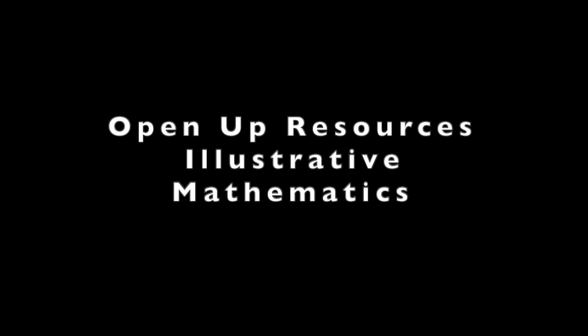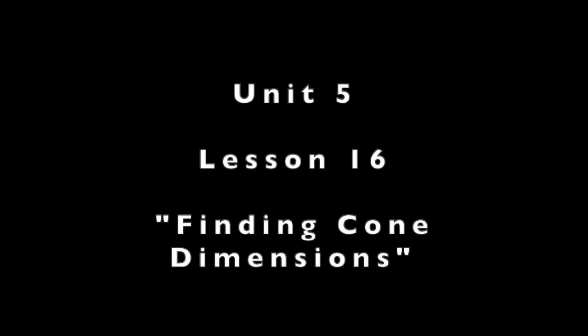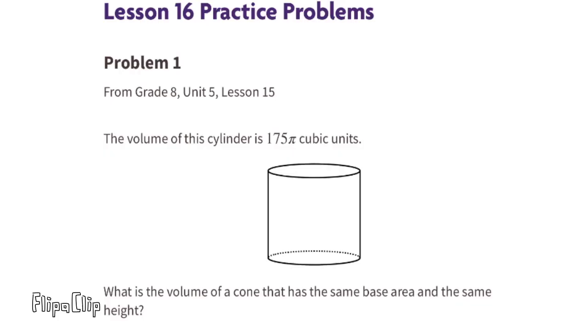Eighth grade Open Up Resources Illustrative Mathematics, Unit 5 Lesson 16: Finding Cone Dimensions. Problem number one from eighth grade Unit 5 Lesson 15: The volume of this cylinder is 175 times pi cubic inches. What is the volume of